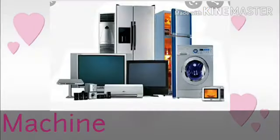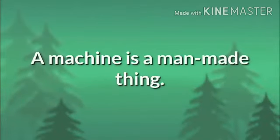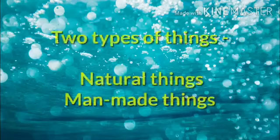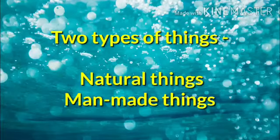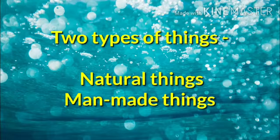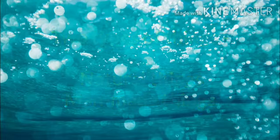Firstly, let us discuss about a machine. A machine is a man-made thing. Students, there are two types of things: number one is natural things, and the second one is man-made things.